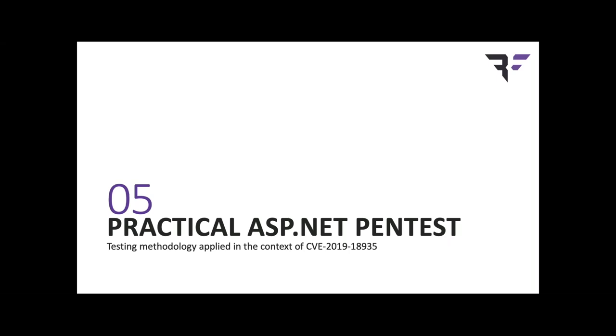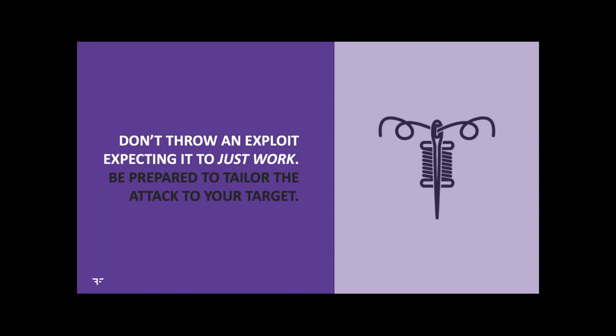I want to show what it looks like to exploit this vulnerability while dealing with all the nuance a real target provides. The theme is that you shouldn't throw an exploit expecting it to just work — we're taking functionality intended for file upload and getting remote code execution. You should be prepared to tailor the attack to the specific target: the specific software version, the .NET framework version, underlying architecture, egress filtering rules, and other configuration differences that cause it to behave unexpectedly.